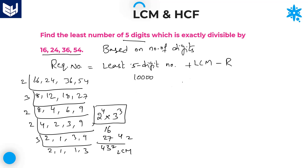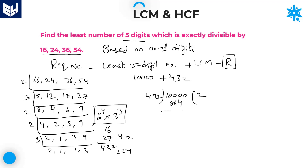LCM of the given numbers is 432. Now, how can you get the remainder? As I already told you, you have to divide the least n-digit number by the LCM. Here, least 5-digit number is 10,000 and LCM is 432. Dividing: 432 times 23 is 9,936. So 10,000 divided by 432 gives a remainder of 64.